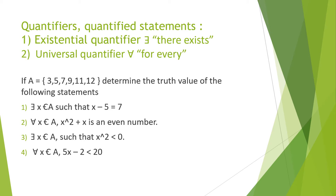The first is the existential quantifier — its sign means 'there exists,' meaning the statement should be true for at least one element or member. The second is the universal quantifier — its sign means 'for every,' so the statement should be true for all members.